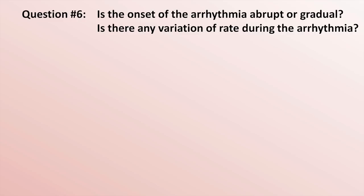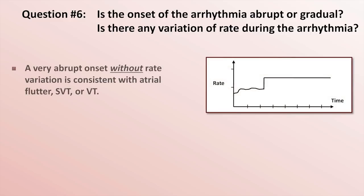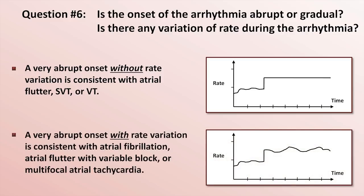And the last of the six questions, which is the two-parter: is the onset abrupt or gradual, and is there any variation of rate? As shown on a graph of heart rate as a function of time, a very abrupt onset without rate variation is consistent with atrial flutter, SVT, or VT. Whereas a very abrupt onset with rate variation is consistent with AFib, atrial flutter with variable block, or MAT. A gradual onset — anywhere from 10 seconds to hours — is highly suggestive of sinus tachycardia, though it could also be atrial tachycardia, junctional tachycardia, or ventricular tachycardia driven by enhanced automaticity.